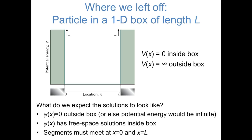First of all, we said that the wave function has to have a value of zero outside the box. Otherwise, the potential energy of the object would be infinite, which isn't possible. Also, we said that inside the box, the wave function has to behave as if it's in free space. In other words, the wave function has to be oscillating. It has to be a sine or a cosine or a complex exponential or some combination of those.